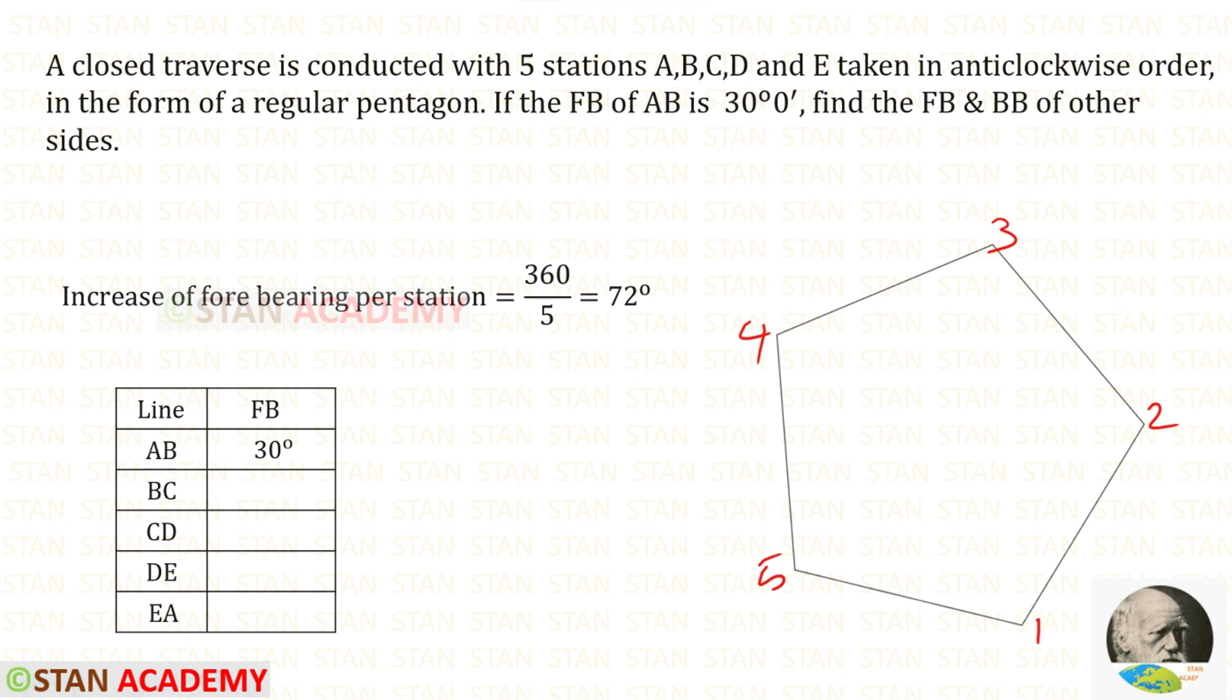So we have to divide 360 by 5. When we do that, we will get 72 degrees. The forebearing of AB is given as 30 degrees. We have to find the rest of the four bearings.